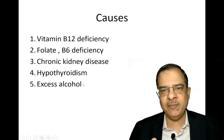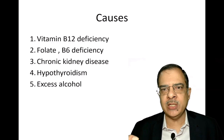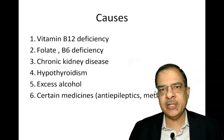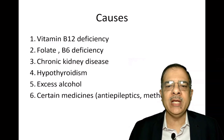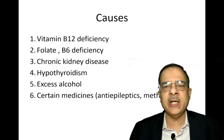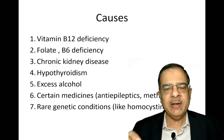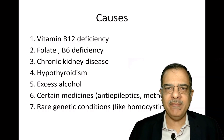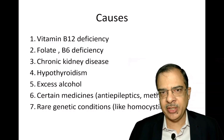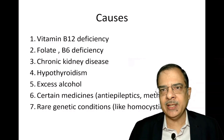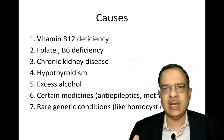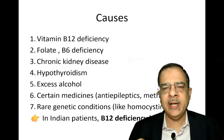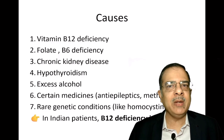When a patient with high homocysteine comes to us, we should ask history of thyroid disorders, kidney disease, and alcohol use. We should also ask whether the patient is taking medications like anti-epileptics or methotrexate, which reduce folic acid levels. There is also a rare genetic condition called homocystinuria, caused by enzyme deficiency converting homocysteine into cystine, with phenotypic features like Marfan-like features and lens dislocation. In the Indian population, the most common cause of high homocysteine is vitamin B12 deficiency.